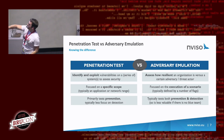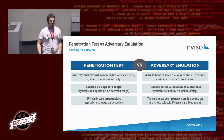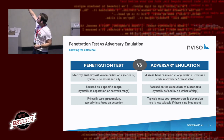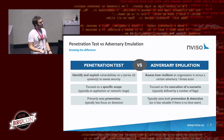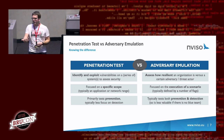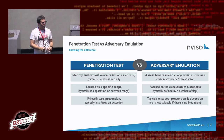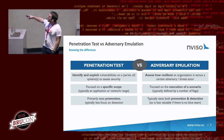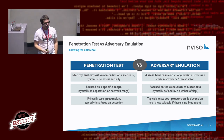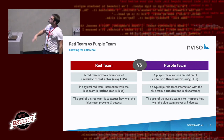Pentesting versus adversary emulation: on the left, pentesting identifies and exploits within a defined scope. With adversary emulation, you assess resilience — how well does this organization prevent or detect attacks? You're typically not limited to a certain scope; you emulate how an adversary would actually work. Pentesting focuses mostly on prevention, while emulation covers both prevention and detection.